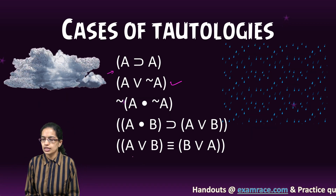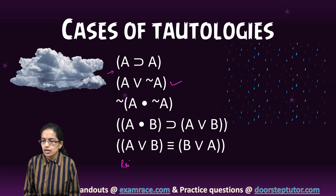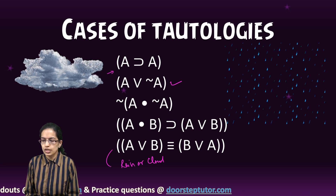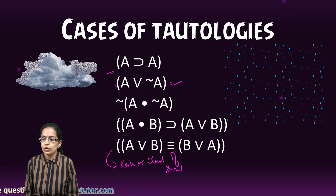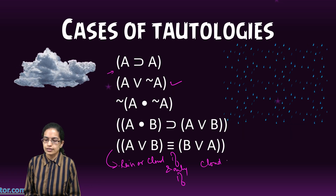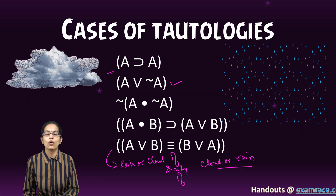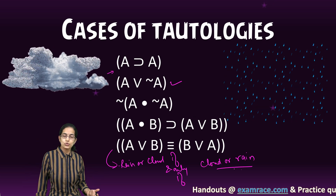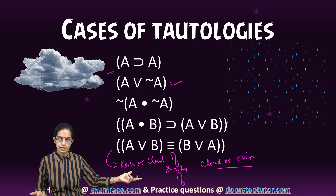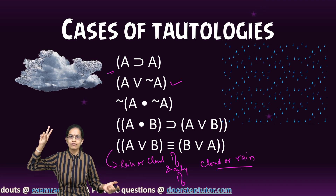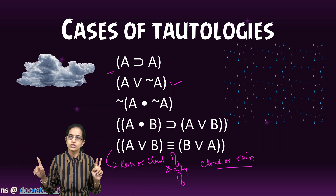Another tautology example: 'rain or cloud if and only if cloud or rain.' In this statement, it is always and always true. To have rain or cloud, there has to be cloud or rain — the two sides are logically equivalent. Therefore, this biconditional is always true.